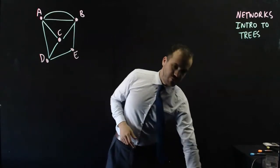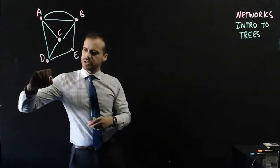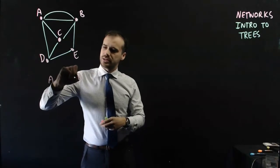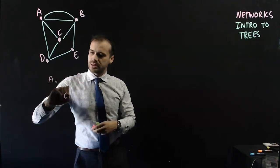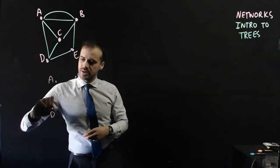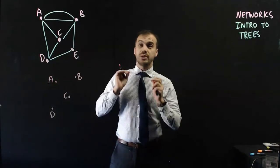I'm going to draw a tree first of a subgraph of this. So I'm not going to consider all of the points. I'm only going to consider A, B, C, and D. I'm just going to leave E alone for a second. I'm doing a subgraph.